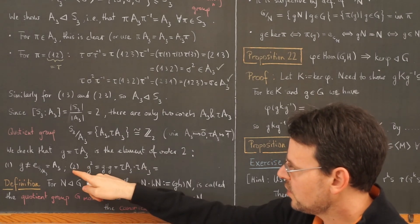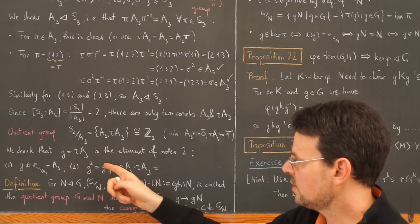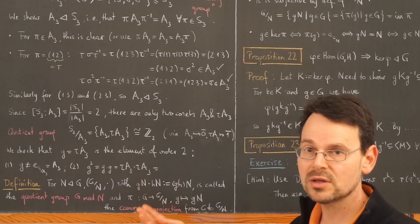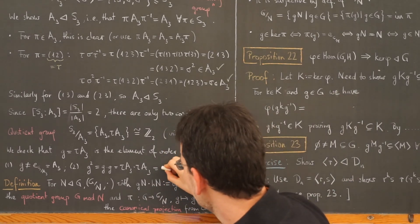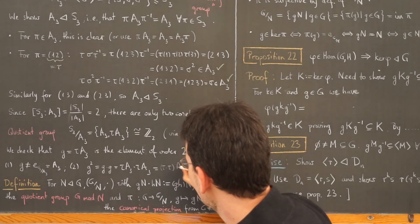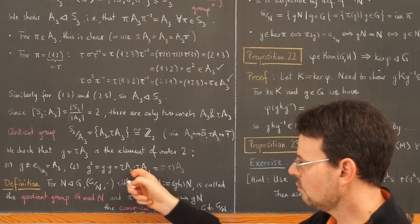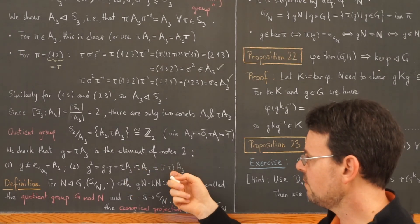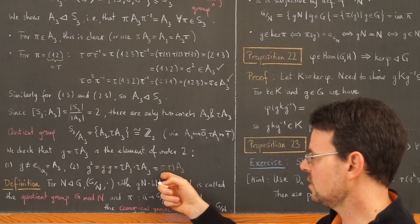And then we have to check that G squared is indeed the identity. So G squared is G times G, which by definition is this here. And now comes the definition of composition in our quotient group, which is given by this here. I simply take two representatives of this coset, of course I choose tau and tau itself, and then I compose these and take the left coset of this composition.